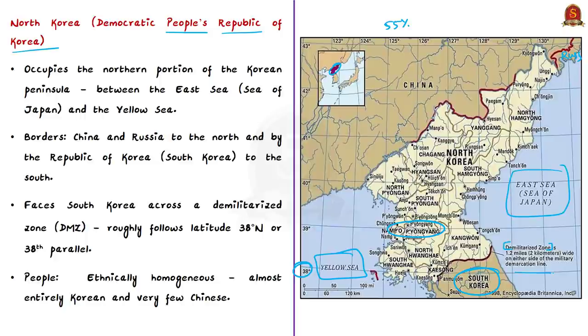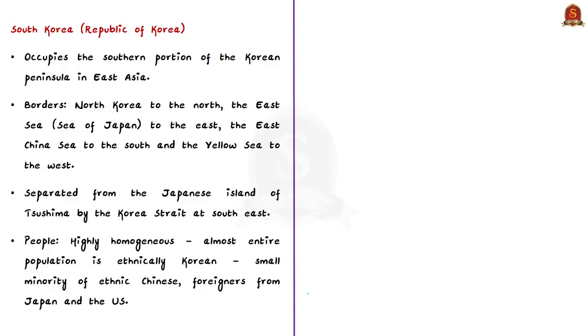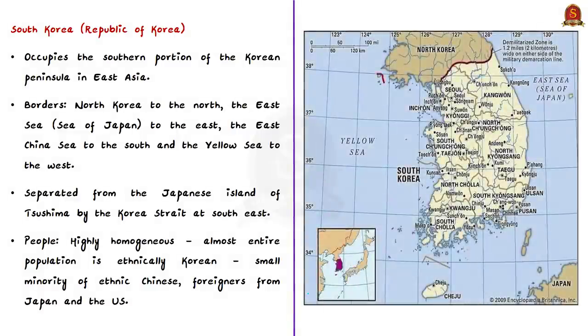The Korean Peninsula is one of the most ethnically homogeneous regions in the world. The North Korean population is almost entirely Korean, with a tiny number of Chinese constituting the only other significant ethnic group. South Korea occupies the southern portion of the Korean Peninsula in East Asia and is bordered by North Korea to the north, and the Northeast Sea (Sea of Japan) to the east.